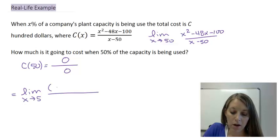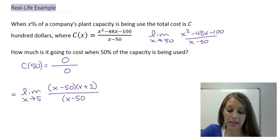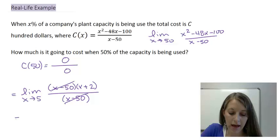My numerator factors as (x minus 50)(x plus 2). And my denominator I just grouped together as x minus 50.